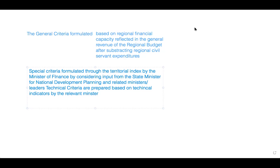The technical criteria is based on the technical indicators of the relevant minister. So the estimation of this Specific Allocation Fund is carried out through two stages: first, determination of the certain areas that receive the special fund; and second, determination of the amount of the Special Allocation Fund for each region.